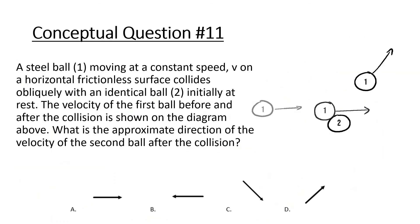Moving on to the next problem. A steel ball 1, moving at constant speed V on a horizontal frictionless surface, collides obliquely with an identical ball 2, initially at rest. The velocity of the first ball before and after collision is shown on the diagram. What is the probable direction of the velocity of the second ball after collision? Looking at it, the answer is C. The reason is that the initial momentum in the y direction for both balls is 0, so after the collision the y-momentum must still be 0. If one ball goes up, the other must go down to counterbalance it.